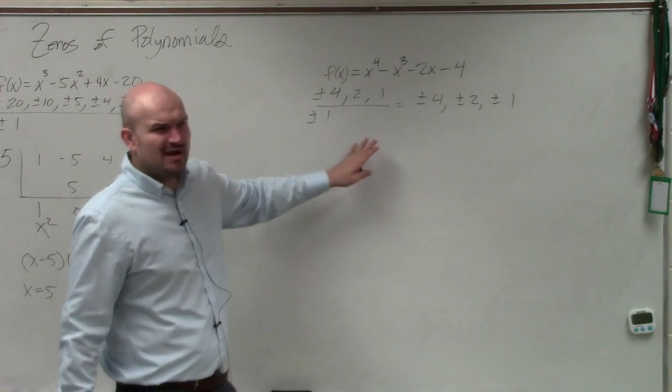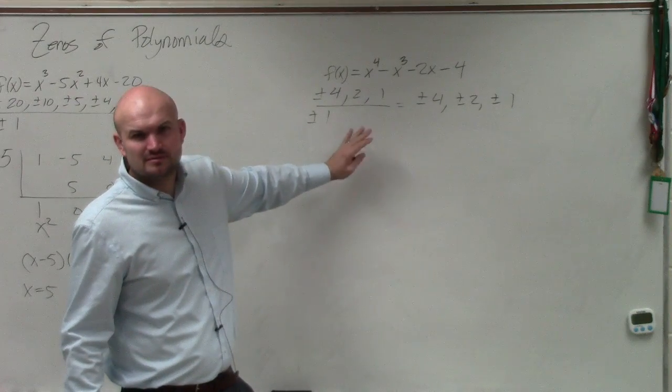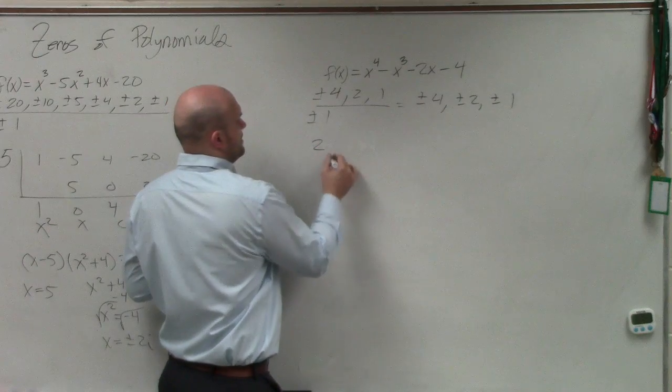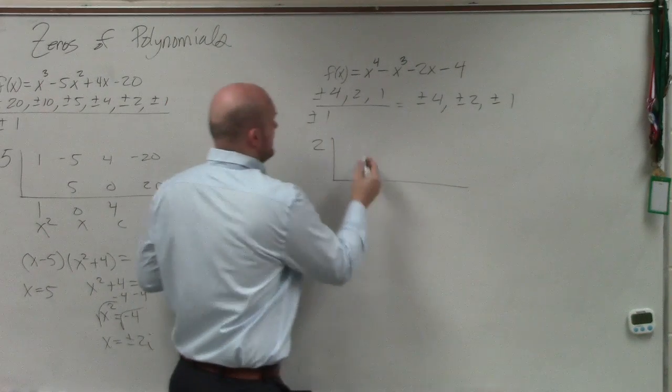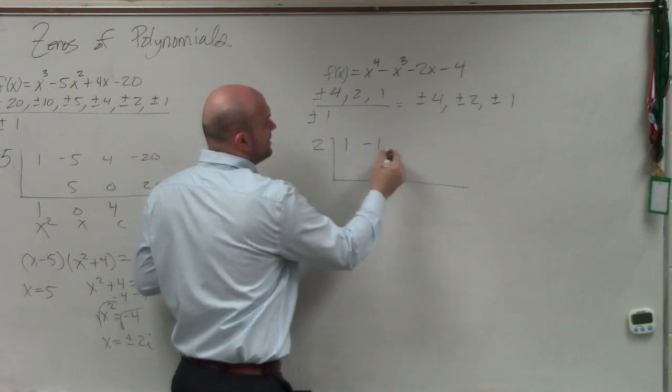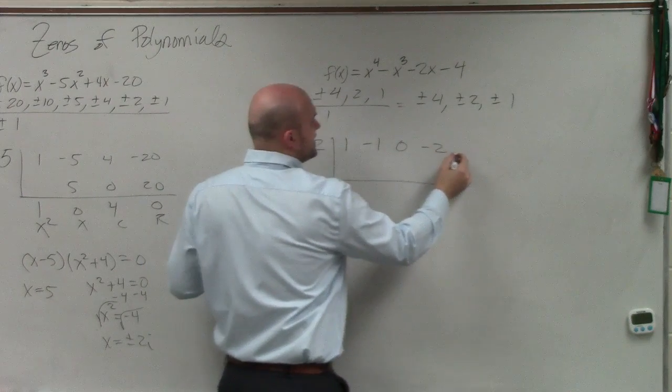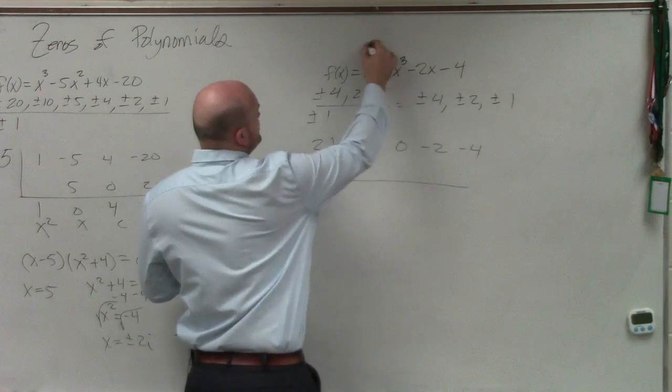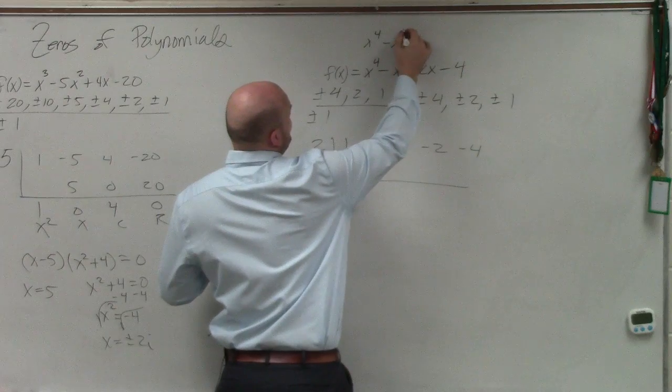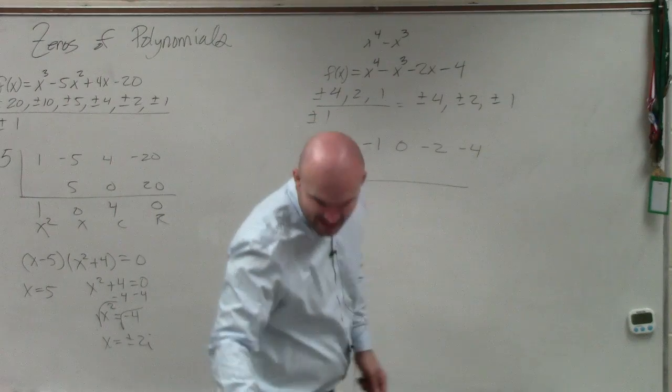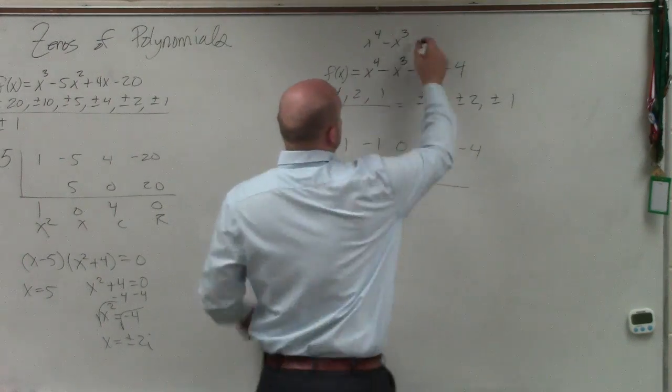All right. So again, did anybody graph this and find me a zero? Yes? 2. All right, so let's use 2. So I go ahead and use 2. And we do 1, negative 1, 0, negative 2, and negative 4. Most students make a mistake because they forget that if you don't have a value for synthetic division, you have to use...